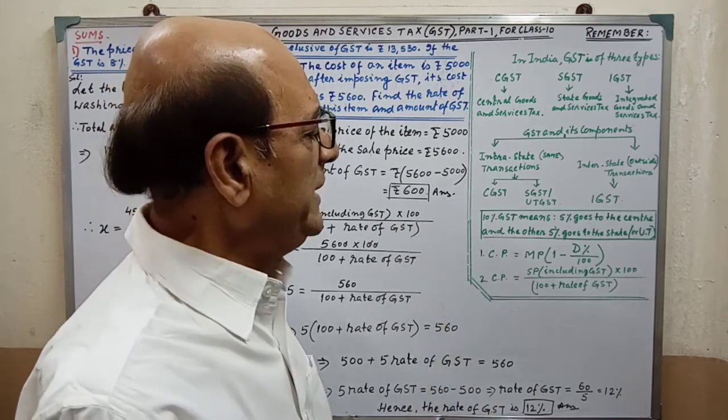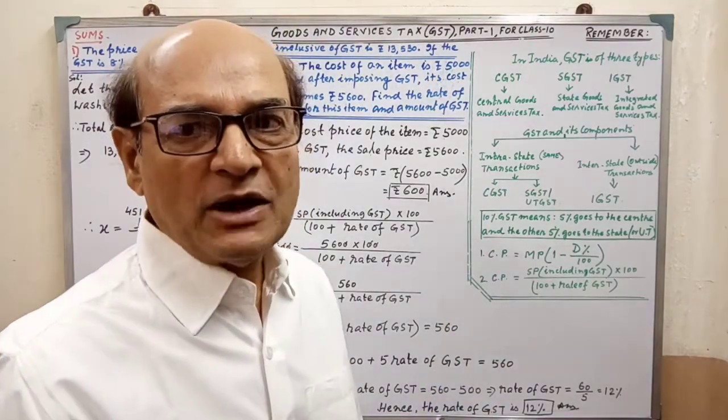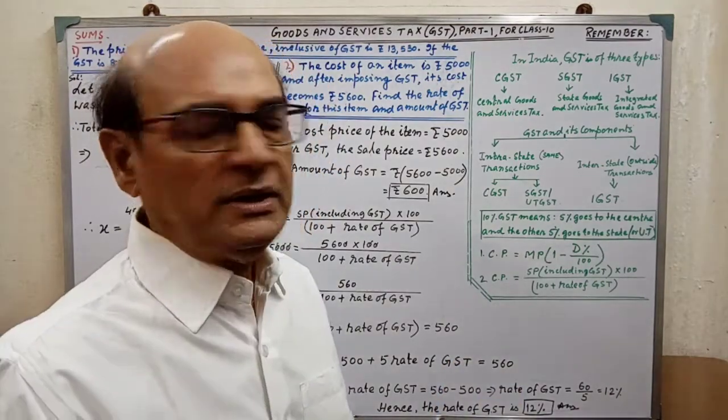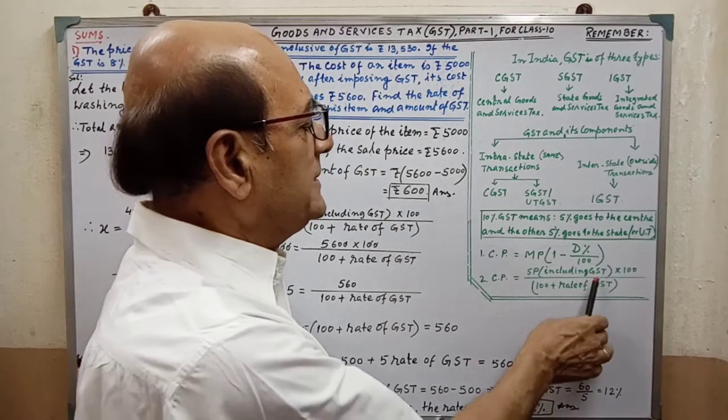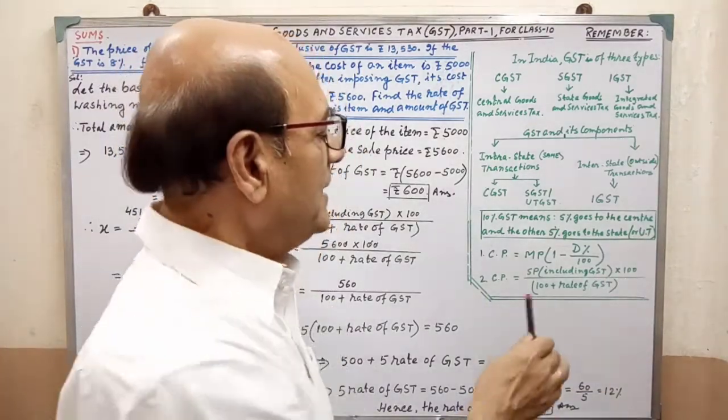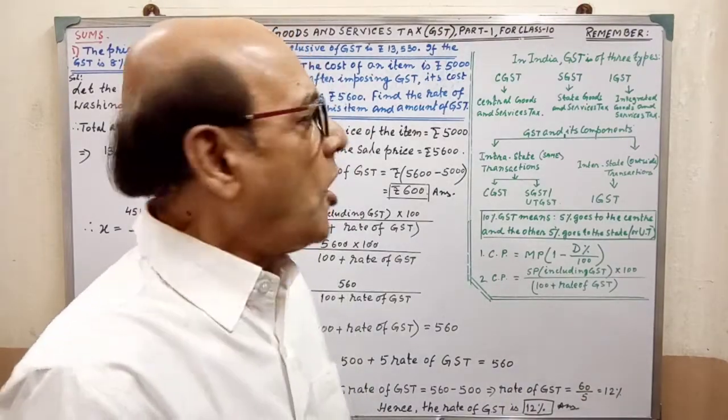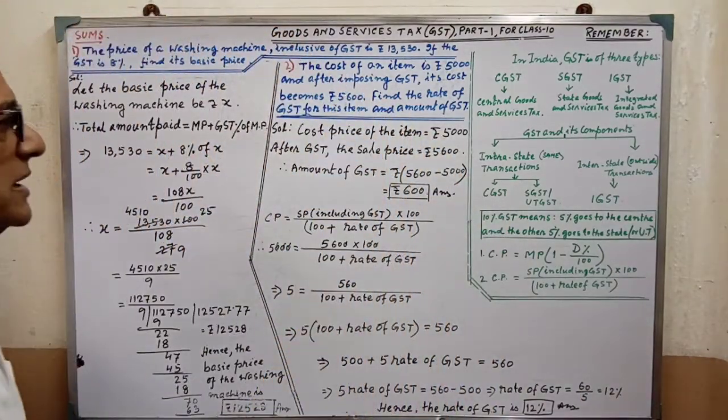CP equal to MP into 1 minus discount percent by 100, and CP equal to SP into including GST into 100 by 100 plus rate of GST. On this, two solutions are given.